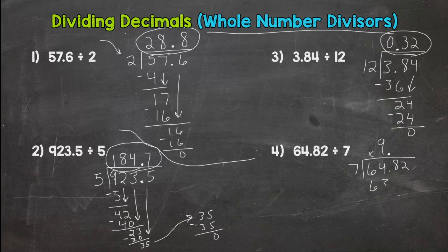Subtract, you get 1. Bring down your 8. All right. How many groups of 7 out of 18? 2. 2 times 7 is 14. Subtract, I get 4. Bring down my 2.